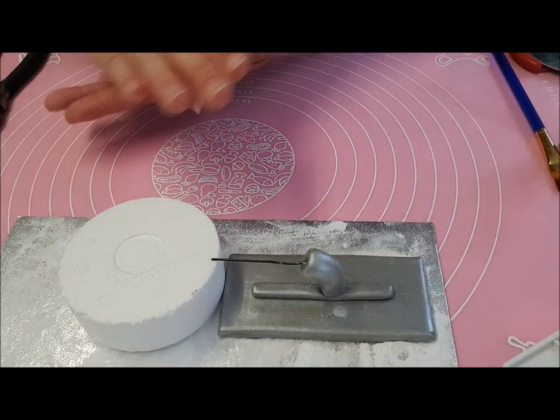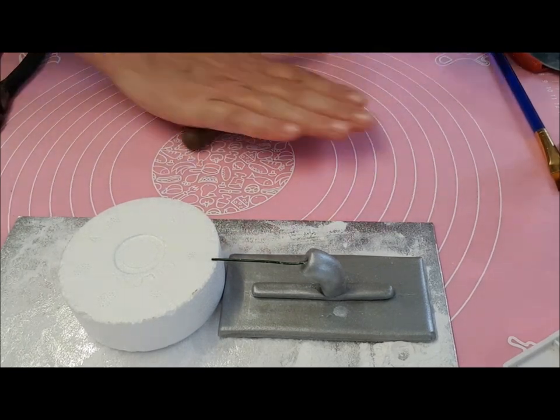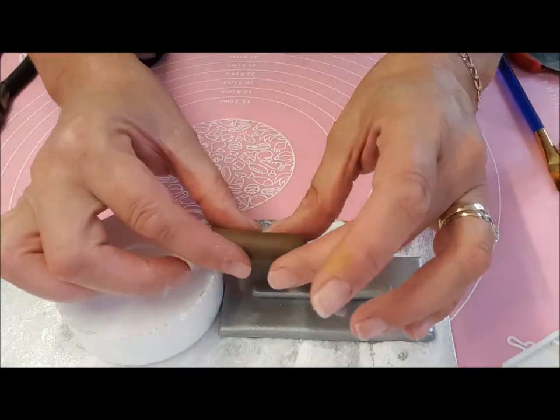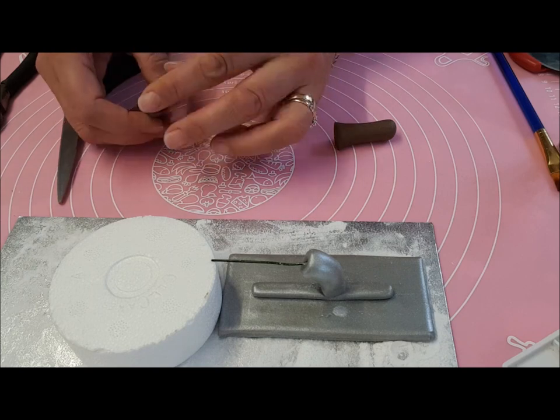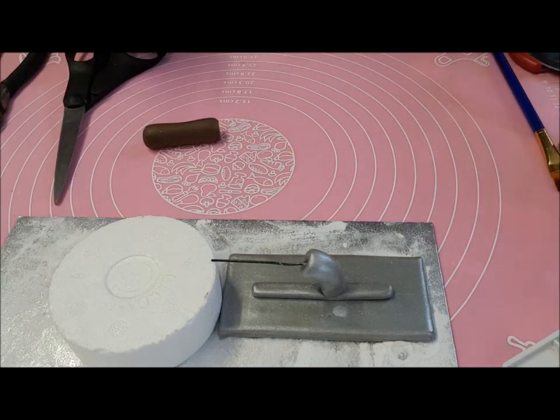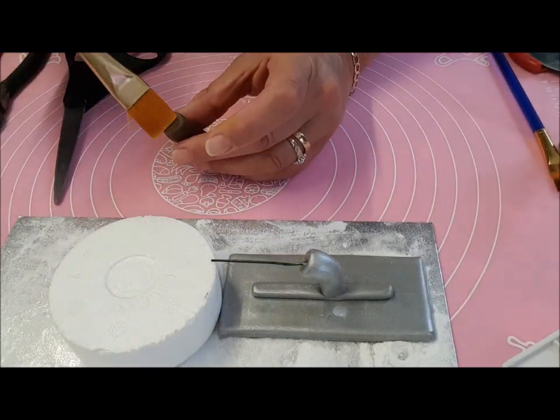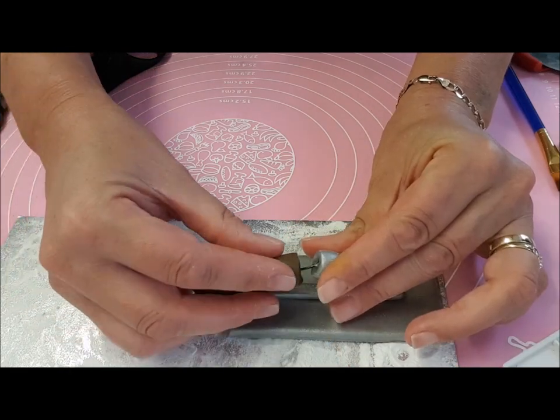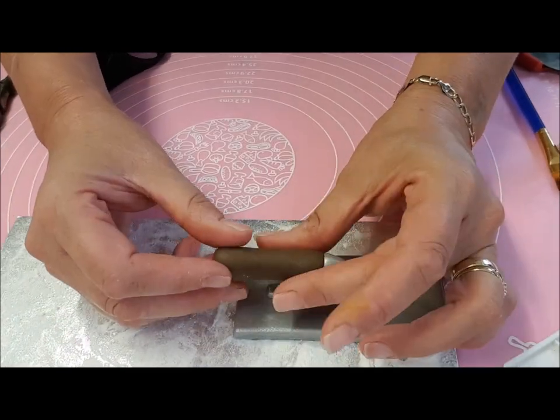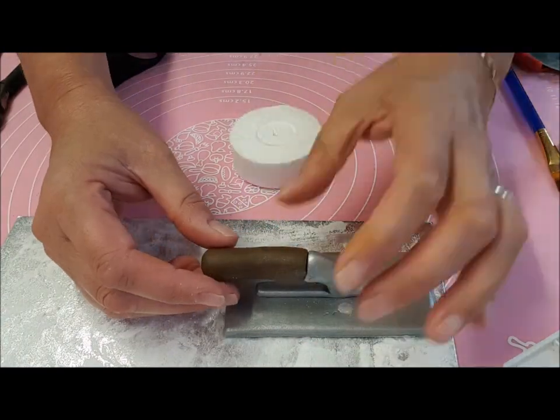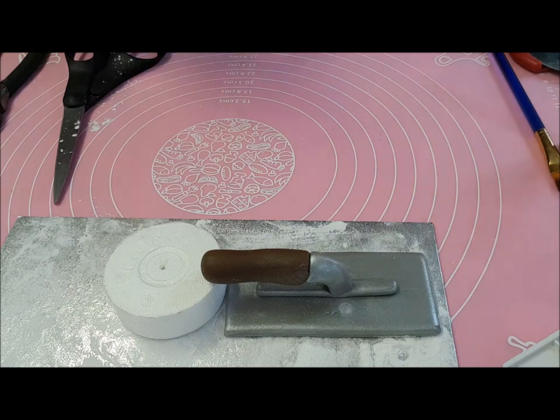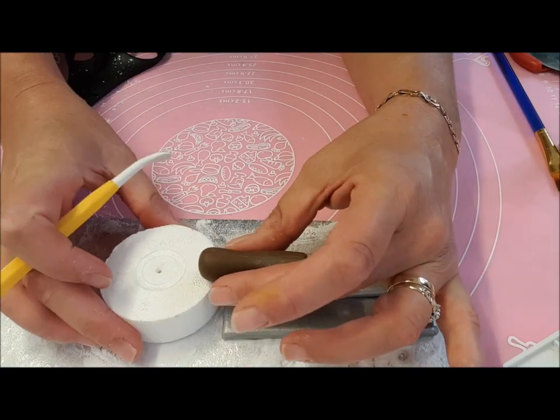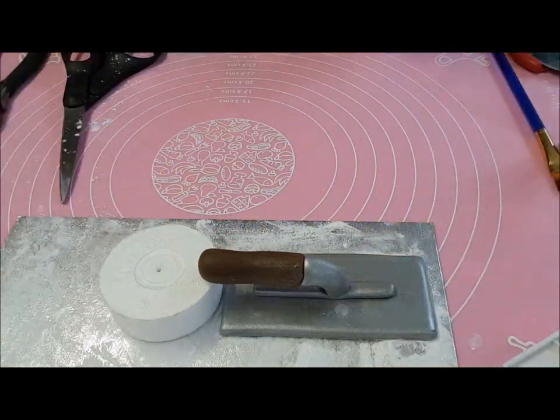Next is the handle. I took some dark brown here, roll it into a sausage shape and then thicker at one end and thinner at the other. Measure it against what you've got, add a bit of gum glue and pop that onto there. Add a few lines for effect and let that dry.